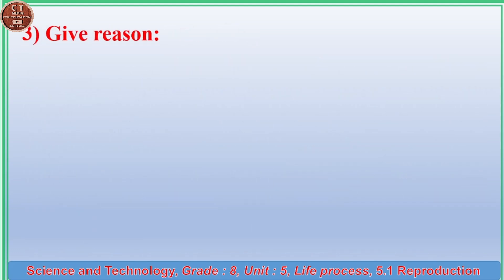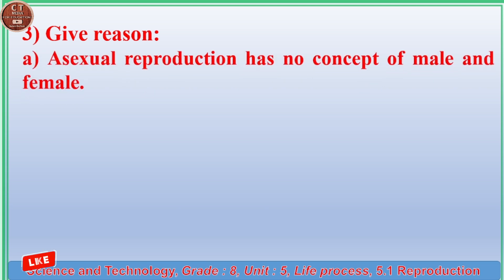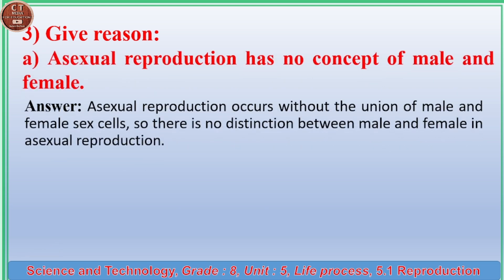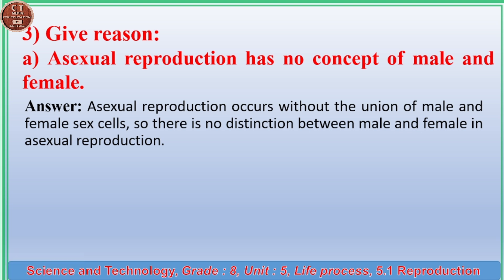Exercise 3, Give Reason: (a) Asexual reproduction has no concept of male and female. Answer: Asexual reproduction occurs without the union of male and female sex cells, so there is no distinction between male and female in asexual reproduction.